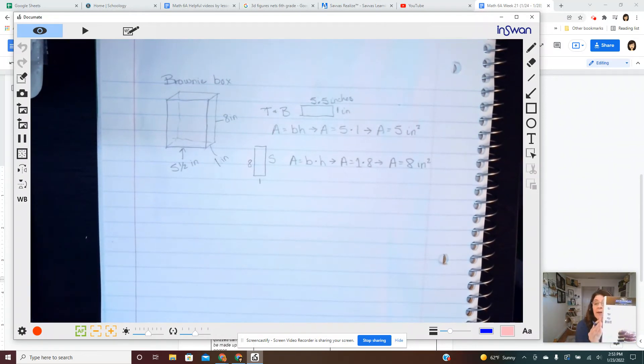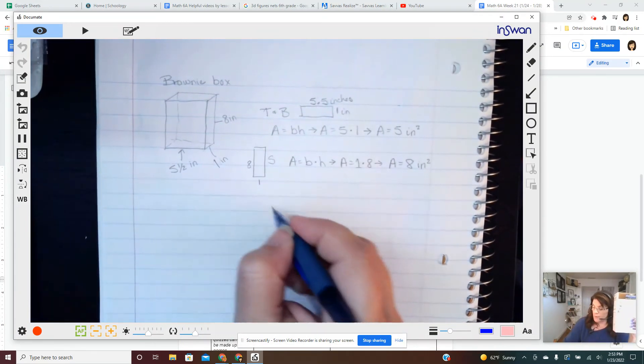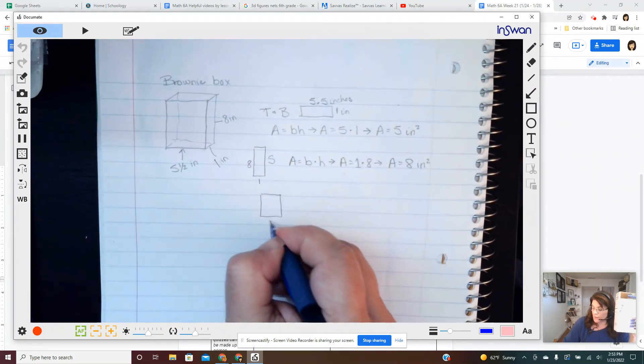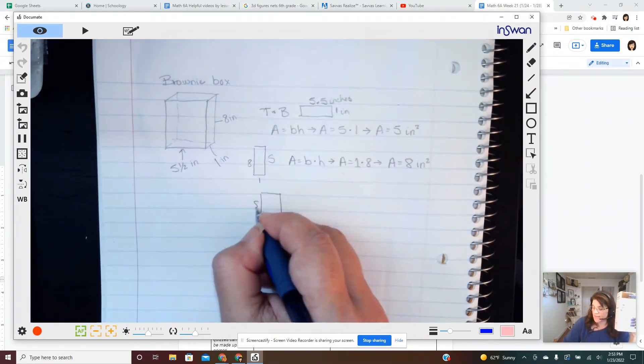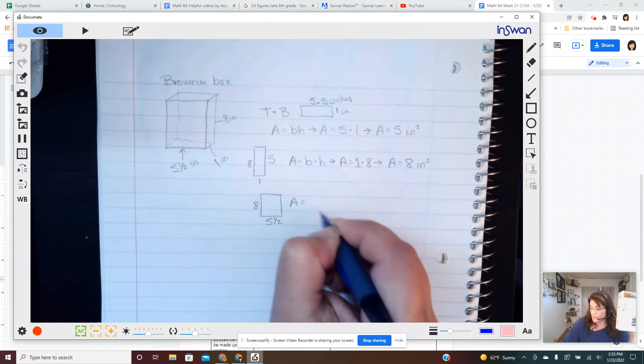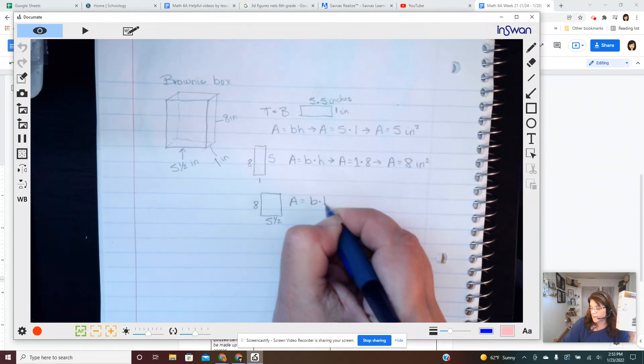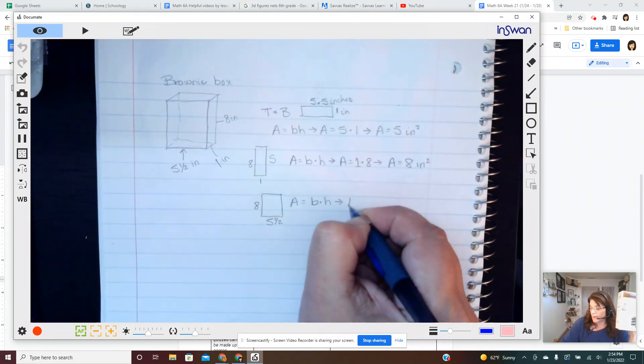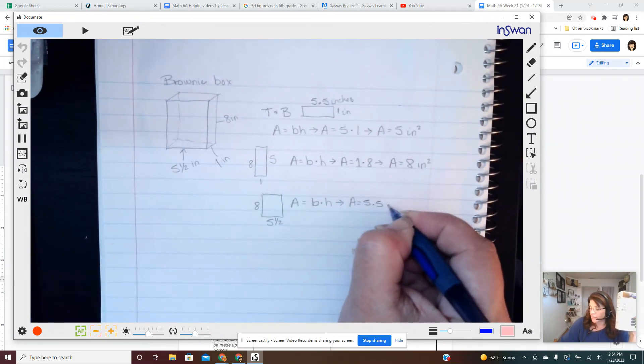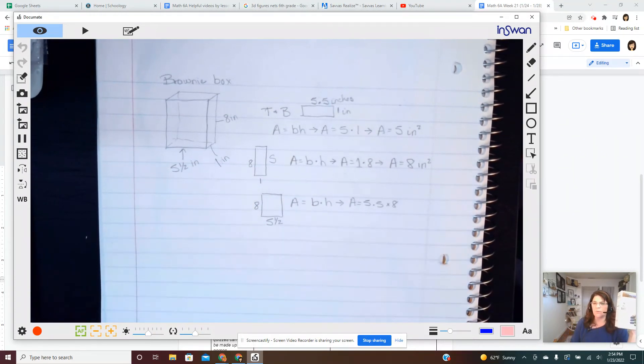So all we have left to do now are the front and back, just this little rectangle. Well I know it looks a lot like this and I know it's five and a half here and it's eight there. Area equals base times height. Area equals five point five times eight. Maybe I can do this in my head, maybe I can't.